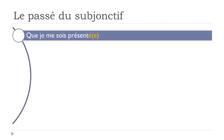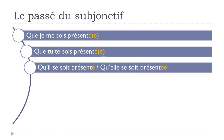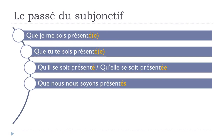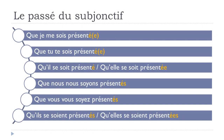For reflexive verbs like se présenter: que je me sois présenté, que tu te sois présenté, qu'il se soit présenté, qu'elle se soit présentée, que nous nous soyons présentés, que vous vous soyez présentés, qu'ils se soient présentés, qu'elles se soient présentées. Note the reflexive pronoun changes with each person.